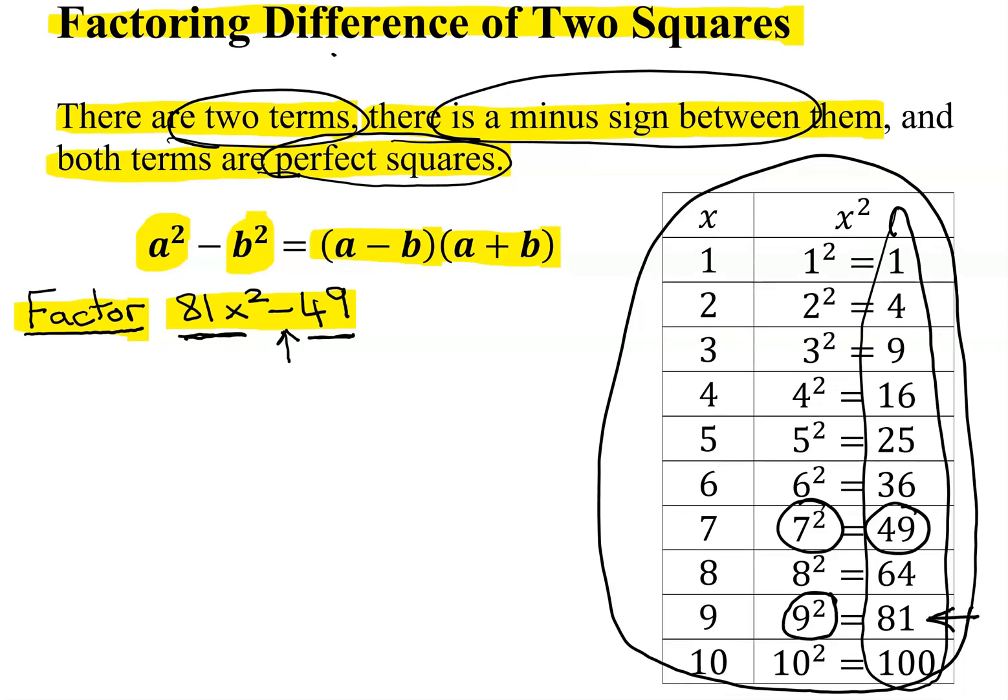So now we're ready to factor this. And remember, it's going to factor into two binomials. The first term comes from the square root of 81x squared.